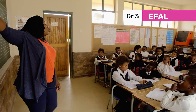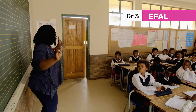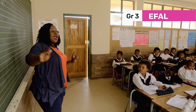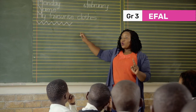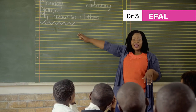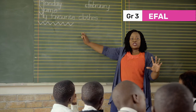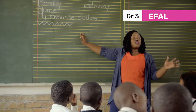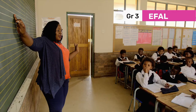Now we're going to write. You're going to write one sentence saying: my favourite clothes are... I'll write that down for you and you can finish it and say what your favourite clothes are.